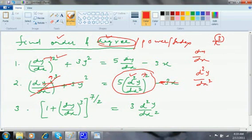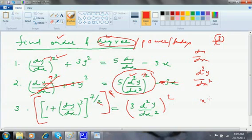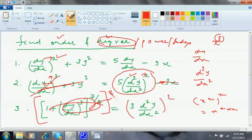There is another question here with power 7/2. What I will do is make a square on this to make the fractional index go away. Using the formula (x^m)^n = x^(mn). Now after that I will wipe out everything. Order is 2, degree is 2.